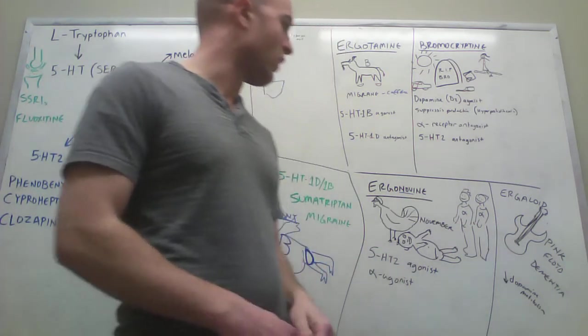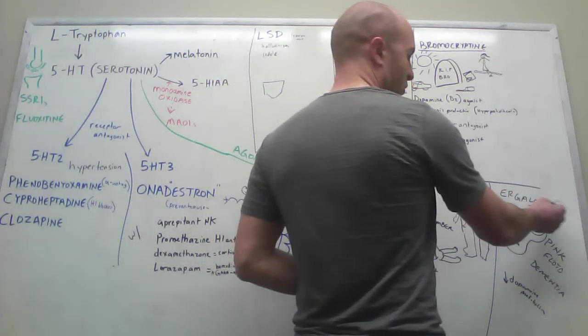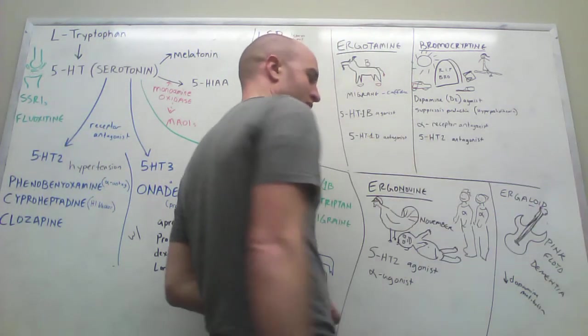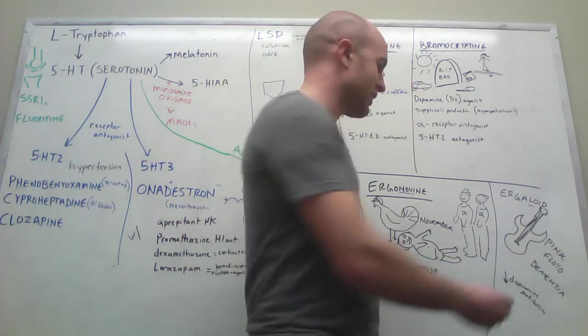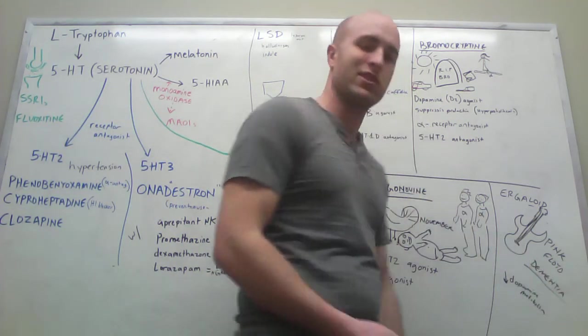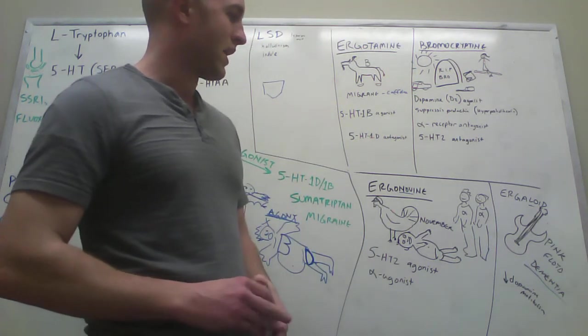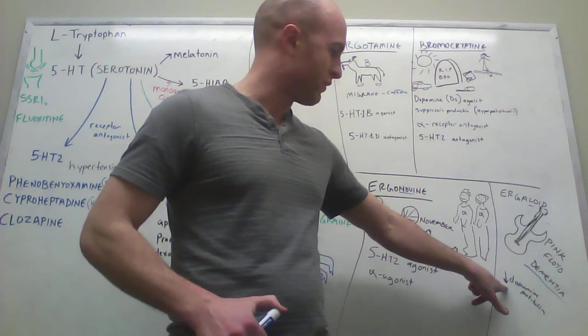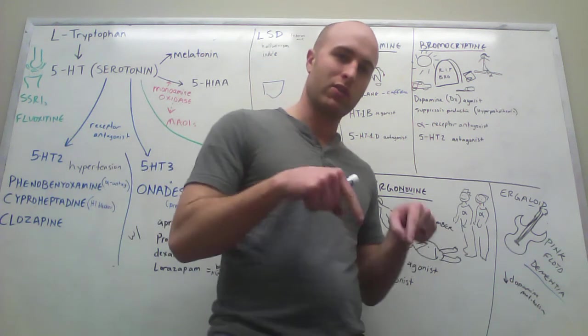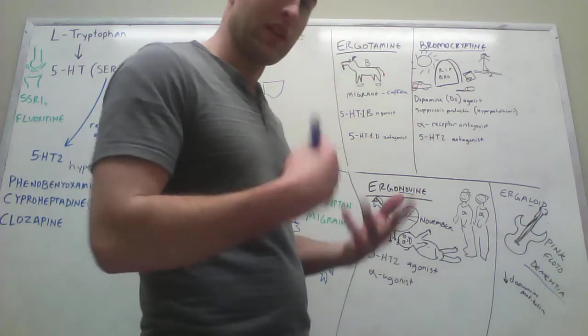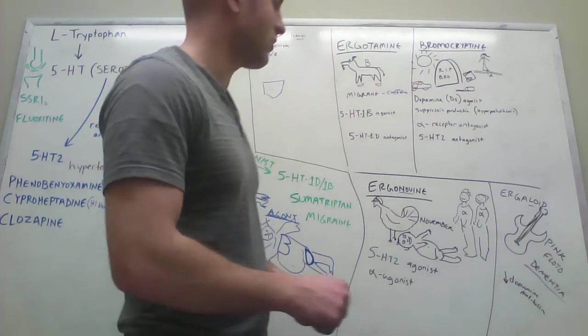Next you have ergoloid. Ergoloid kind of sounded like Floyd, like Pink Floyd, which is this rock band. Pink Floyd, the singer, sings these crazy demented songs. So it's dementia. And he's trying to get off of dopamine. So this decreases dopamine metabolism because he's trying to decrease his eating of dope. So dementia, Pink Floyd, ergoloid, dementia.